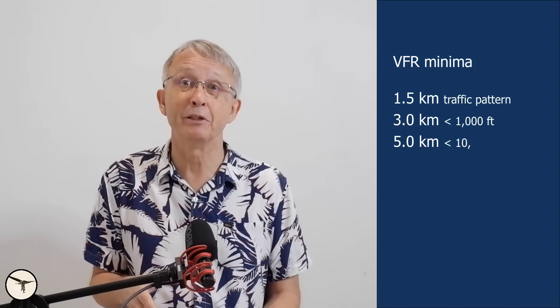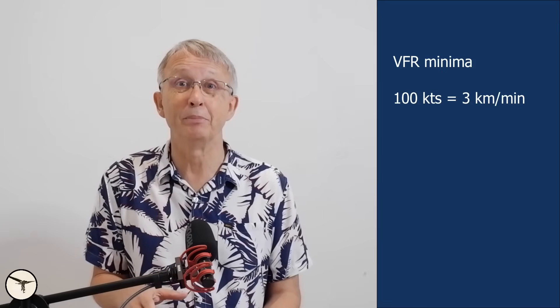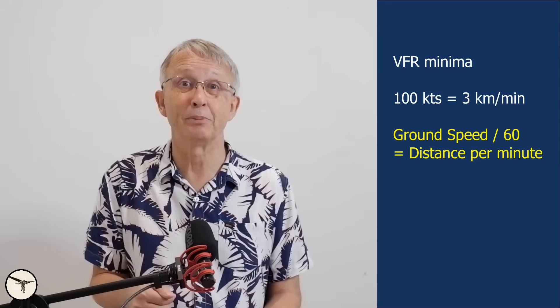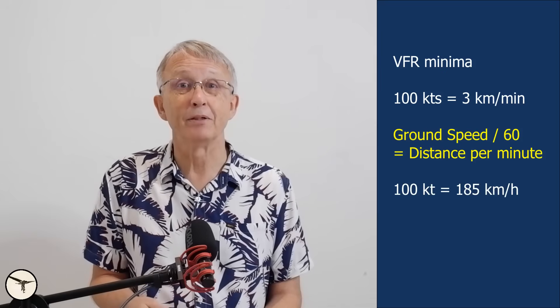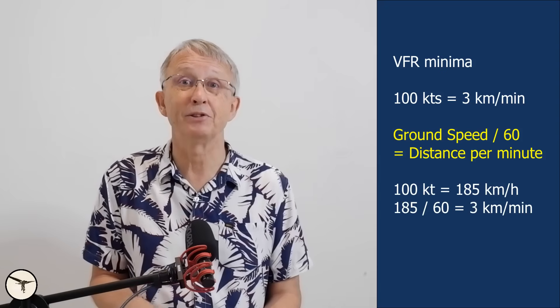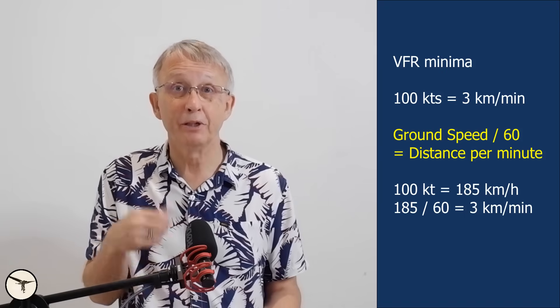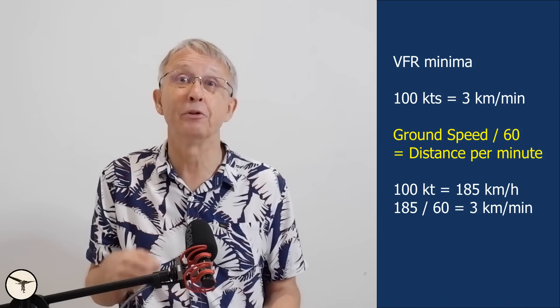VFR visibility minimums range from 1.5 km to 8 km. If your ground speed is 100 knots, you're covering about 3 km per minute. To estimate this in metric units, use the formula: ground speed in km per hour divided by 60 equals distance traveled per minute in kilometers. For example, 100 knots is 185 km per hour; 185 divided by 60 gives 3 km per minute. This helps put visibility requirements into perspective — you should always be able to see far enough ahead to react in time based on how fast you're moving.